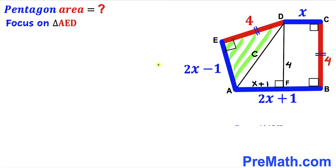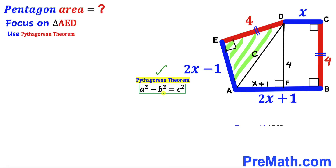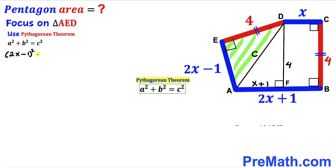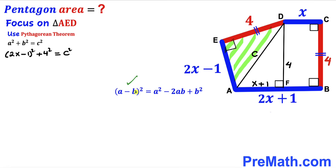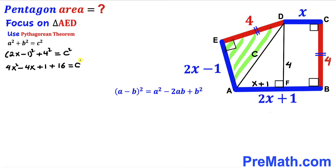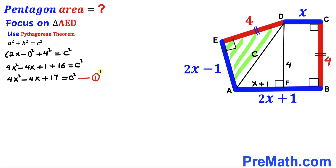Now we focus on right triangle AED and apply the Pythagorean theorem: a² + b² = c². Our hypotenuse is c and the two legs are 2x minus 1 and 4. So we get (2x − 1)² + 4² = c². Expanding using (a − b)² = a² − 2ab + b² gives 4x² − 4x + 1 + 16 = c². This is Equation 1.